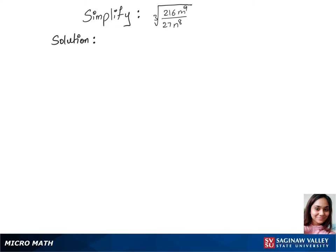Let's simplify this question. We'll first separate the cubic root between 216 m to the power 9 and 27 n to the power 8. So that's cubic root of 216 m to the power 9 over cubic root of 27 n to the power 8.